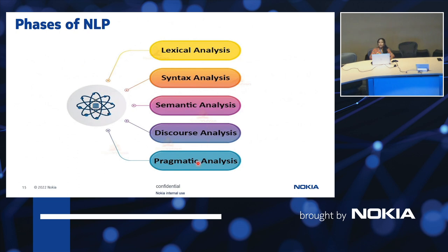The next phase is pragmatic analysis, which uses a set of rules to describe cooperative dialogues — basically dealing with the context of the sentence. For example, 'switch on the TV' can be a request or an order depending on the context in which it is used. These are the five main phases of NLP.